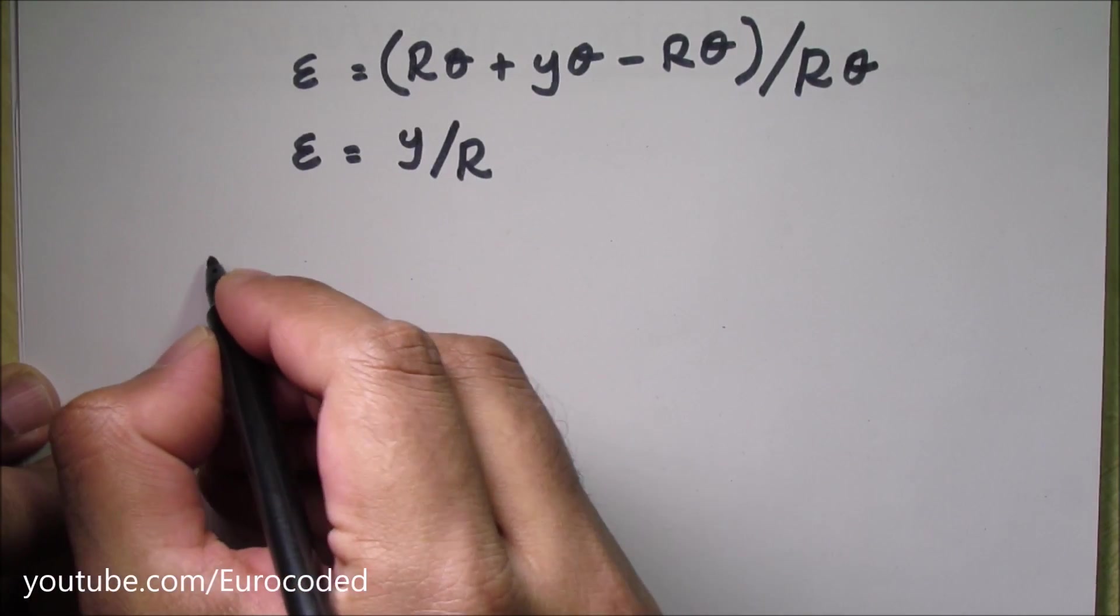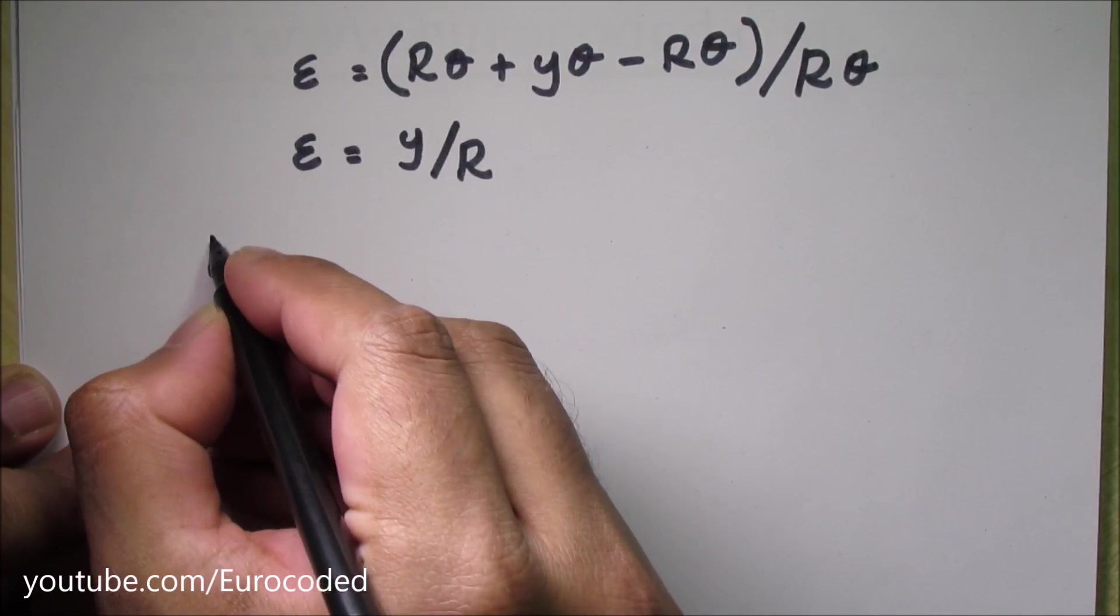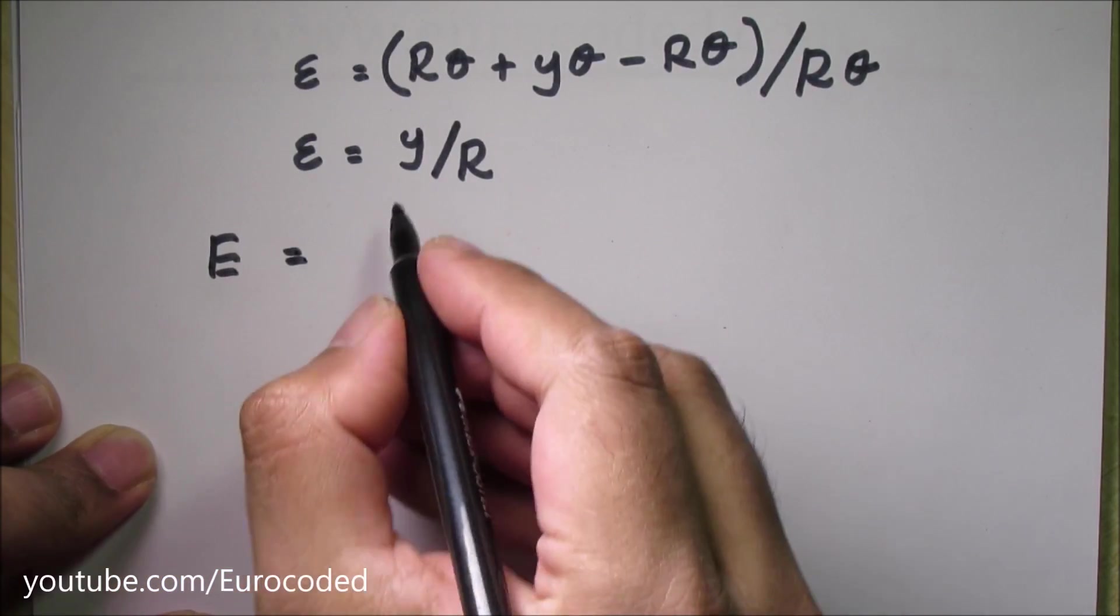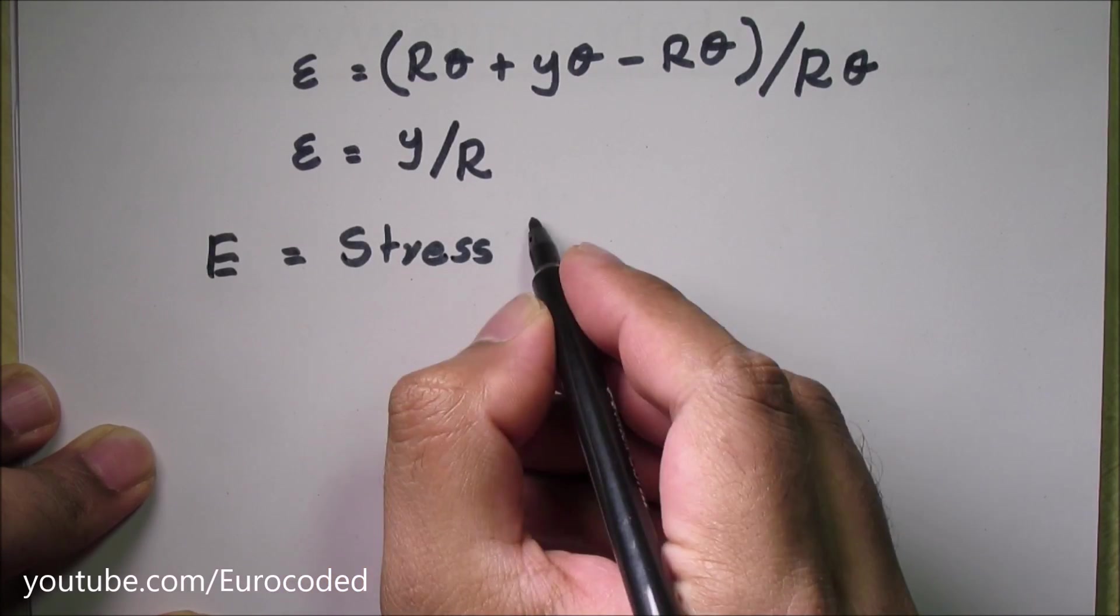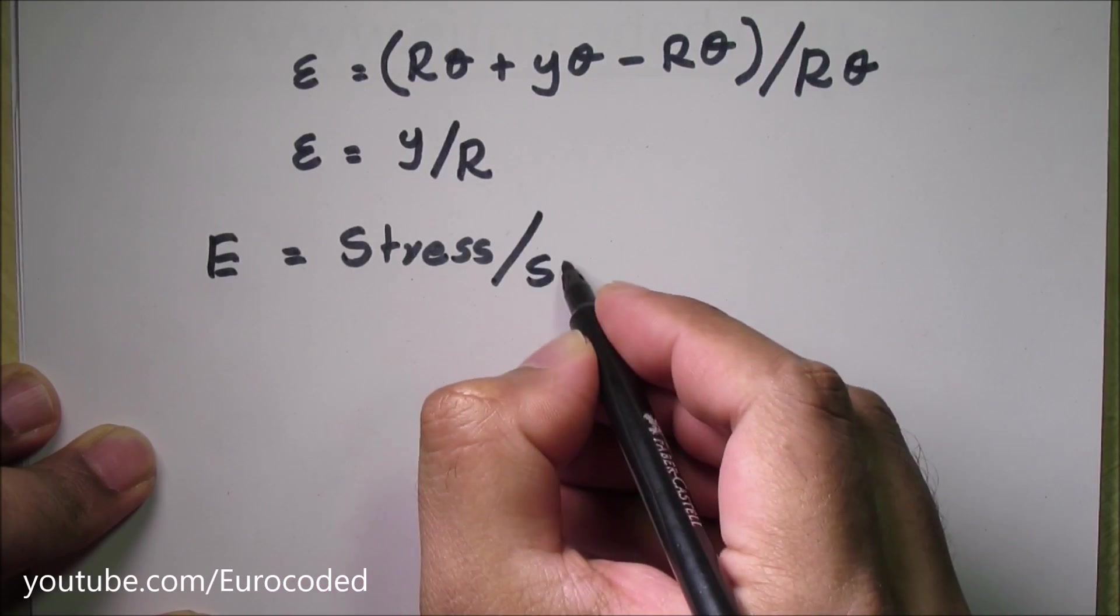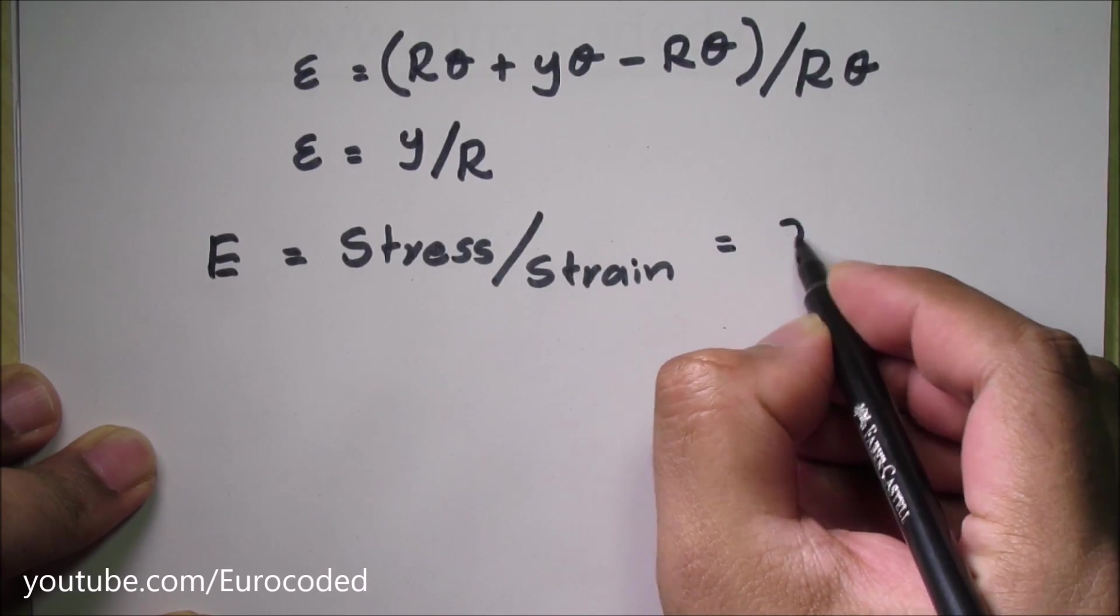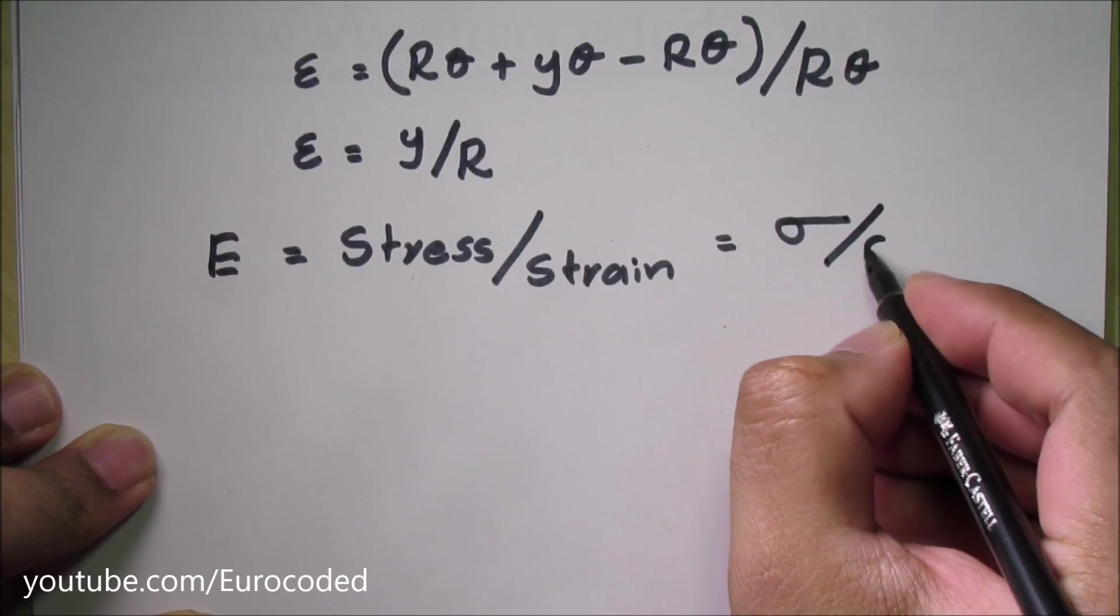This is a familiar equation. Modulus of elasticity E is equal to stress over strain, or we can write with symbols sigma over epsilon.